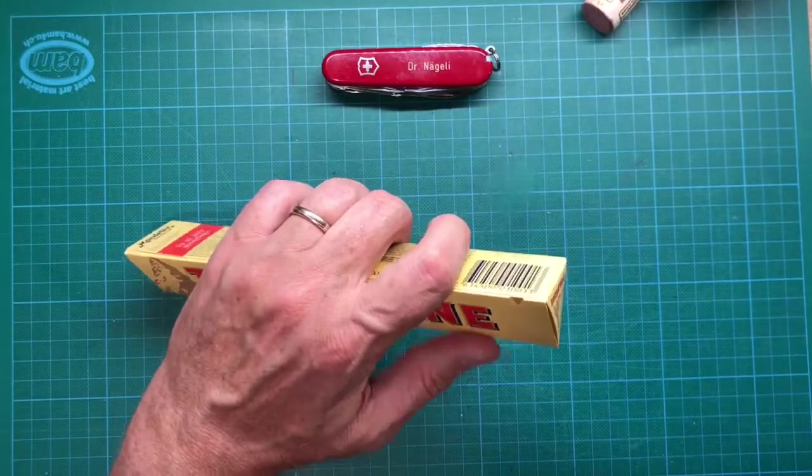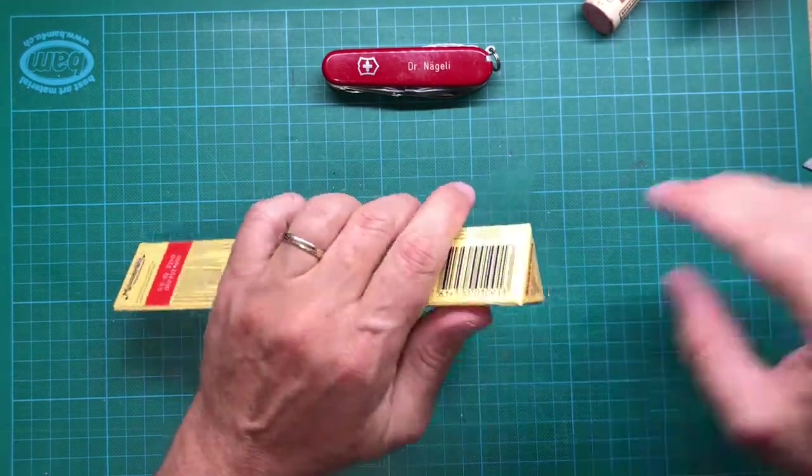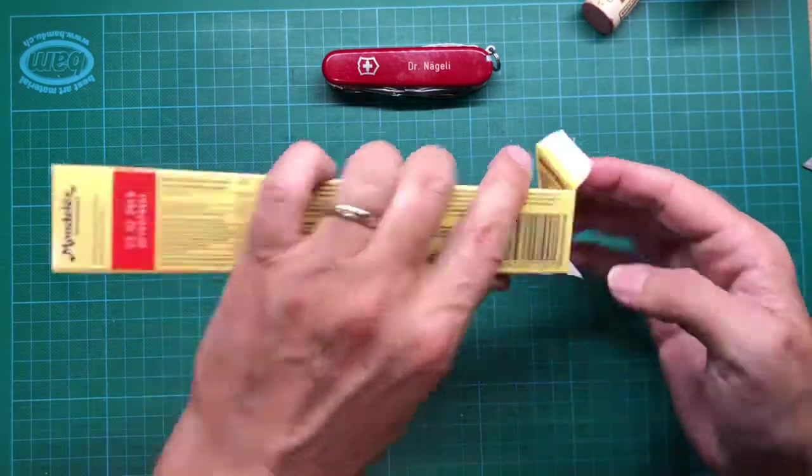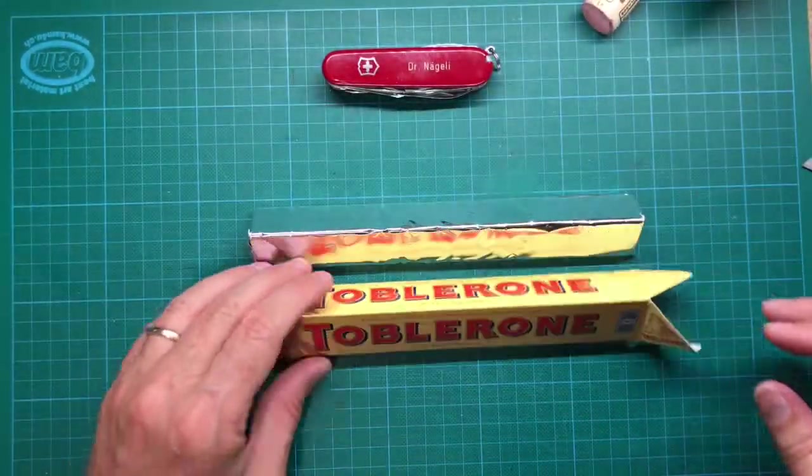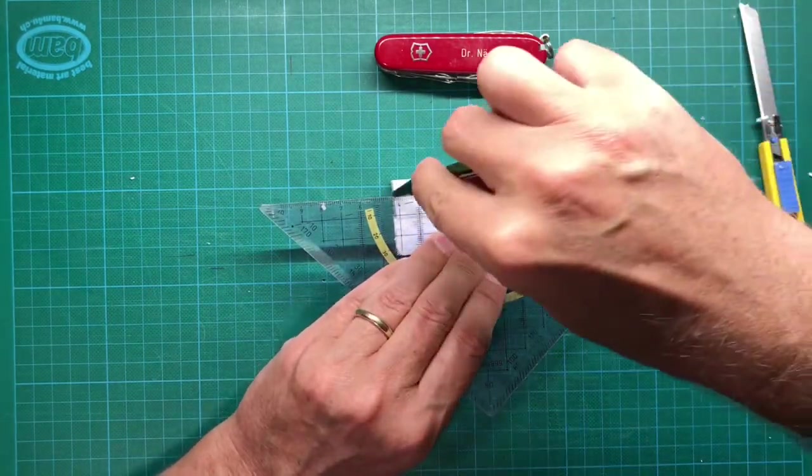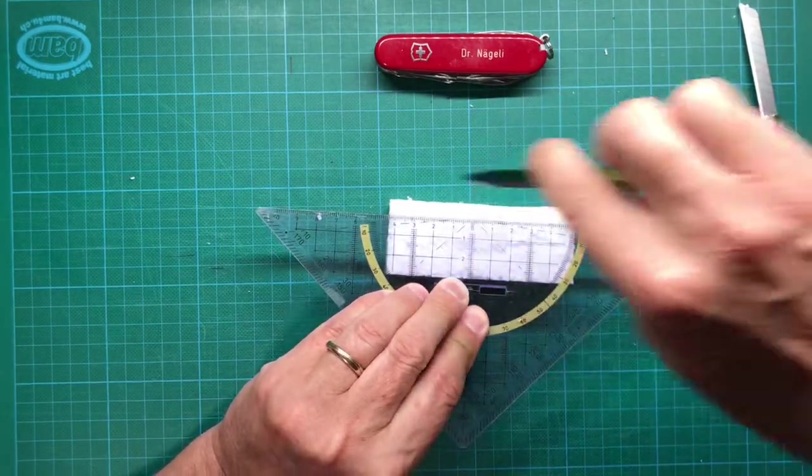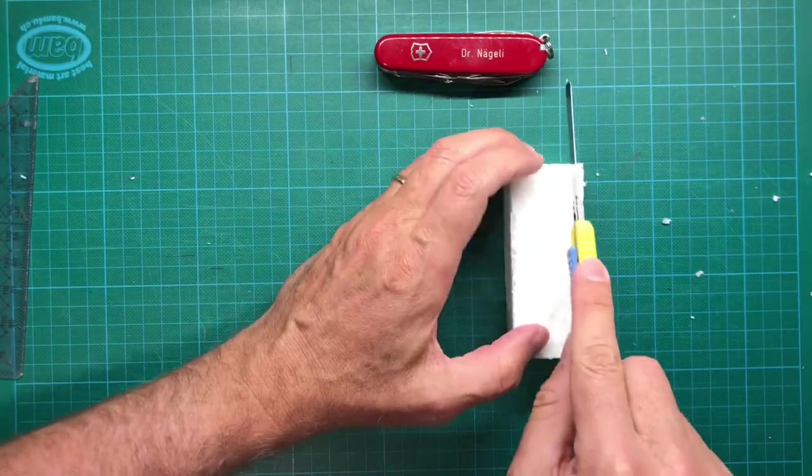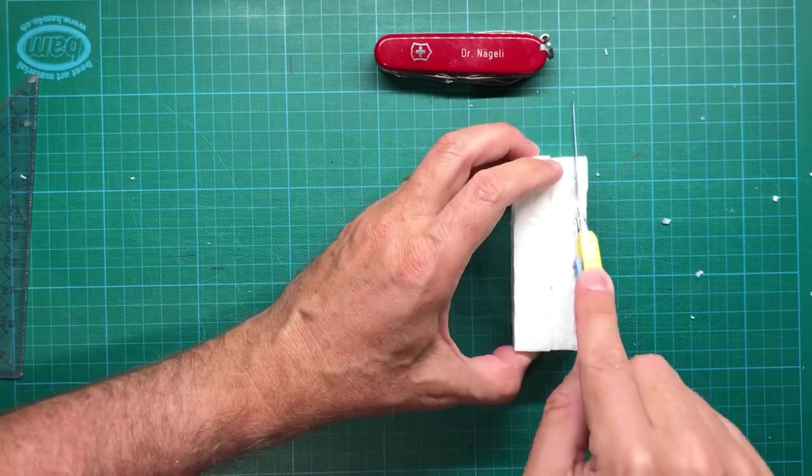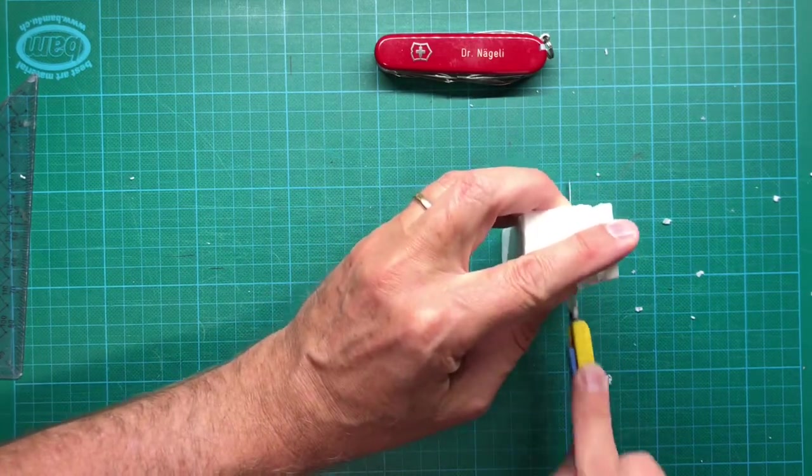But first things first, let's get started by opening up the chocolate bar carefully. After having enjoyed the entire chocolate bar, you are full of energy to cut the styrofoam to a rectangular size 3 x 3 cm or 1.18 inch. The length is chosen according to the size of the power bank.